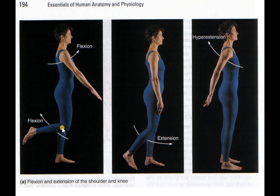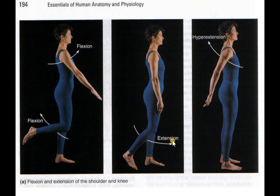Flexion at the knee is where the leg goes up that way. The decrease in joint angle — extension is this way at the knee, where you get an increase in joint angle.